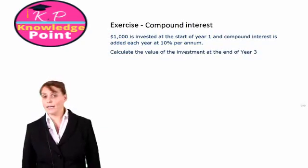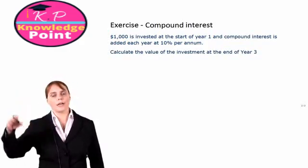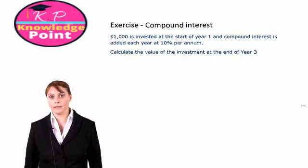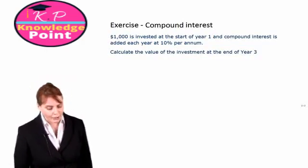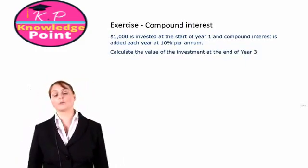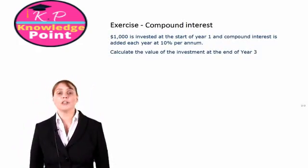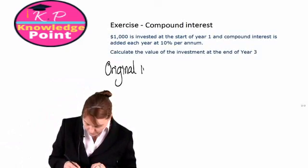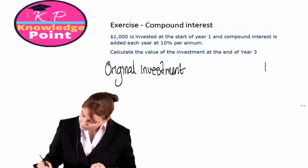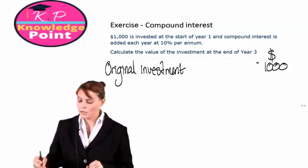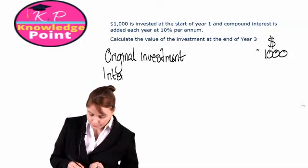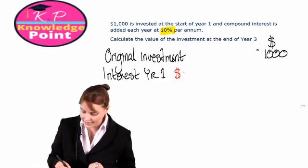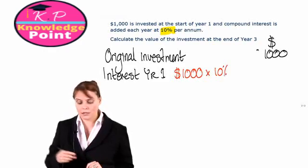We're going to do this exercise twice. The first time we are going to calculate the interest year on year and see what our cumulative total is at the end of year three, and then we're going to use our formula. Our original investment is one thousand dollars invested today. Our interest rate is ten percent, so the interest for year one will be a thousand multiplied by ten percent, which is a hundred dollars.